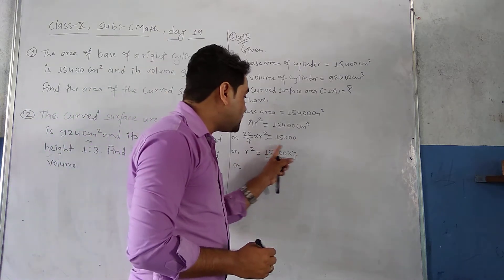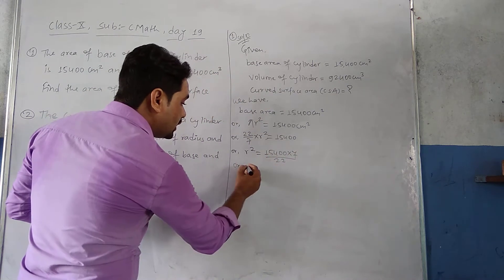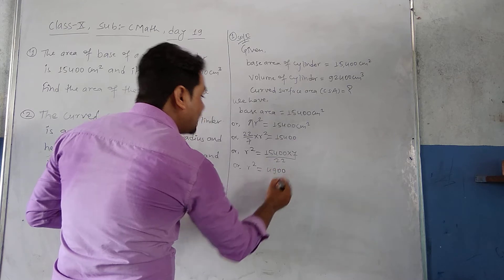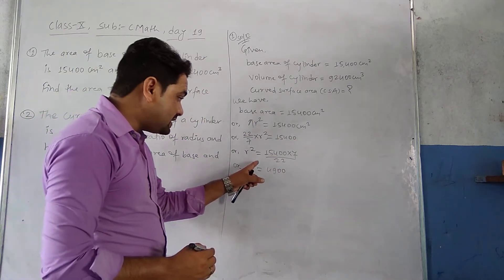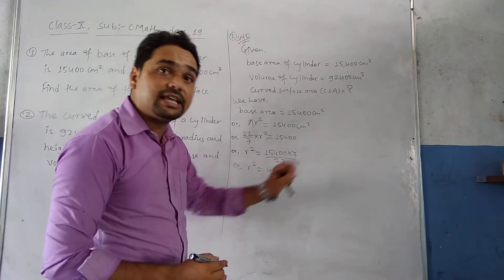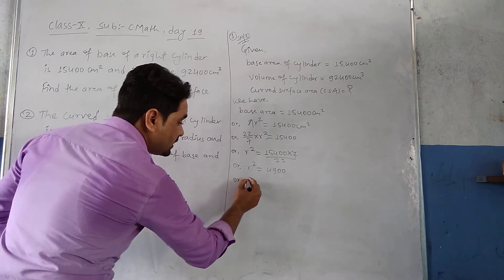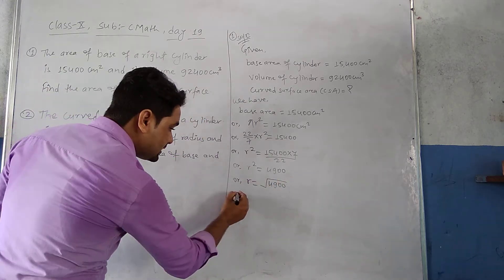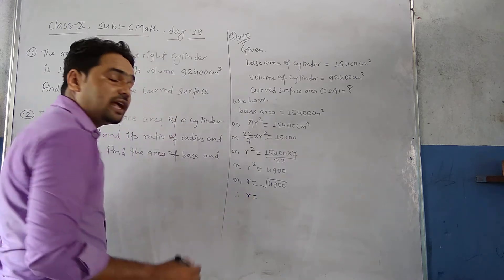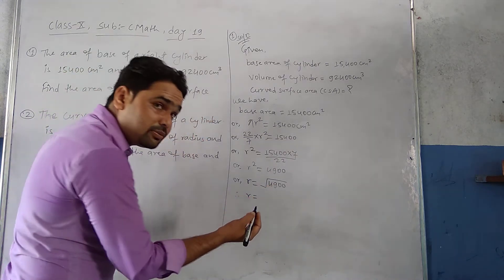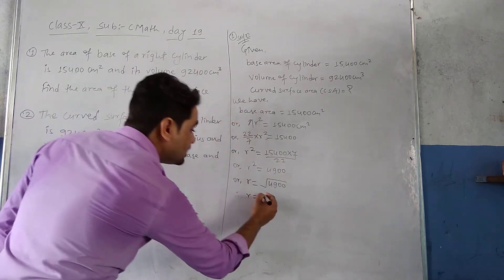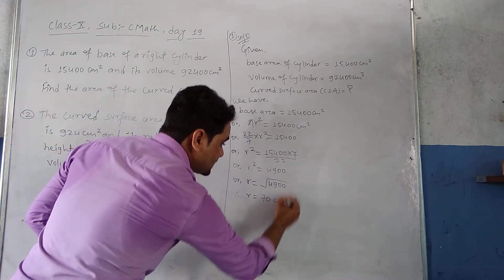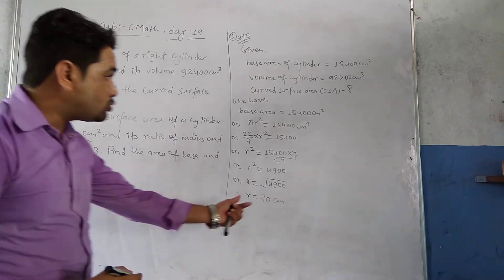When we multiply 15400 by 7 and divide by 22 we get r² = 4900. Since it is r squared, we take the square root: r = √4900 = 70. Therefore the radius r = 70 centimeters.